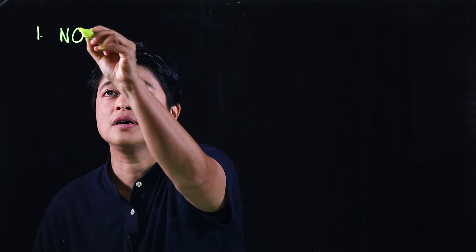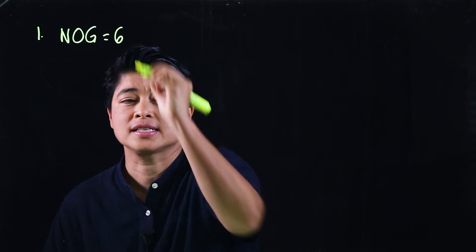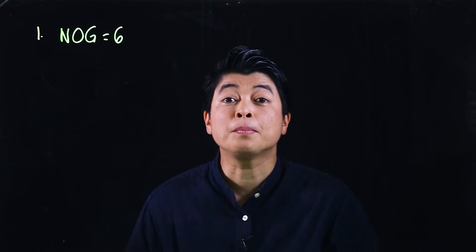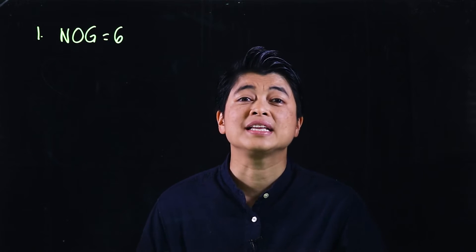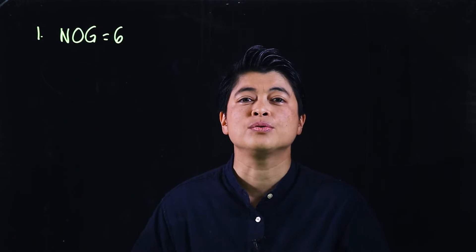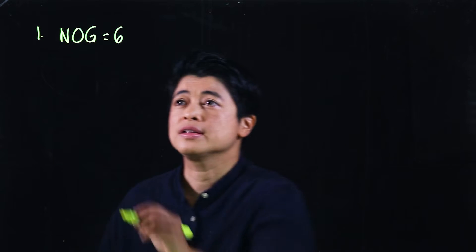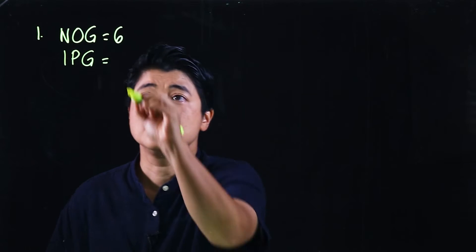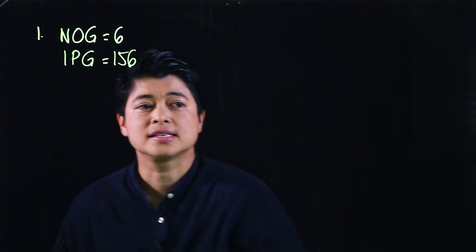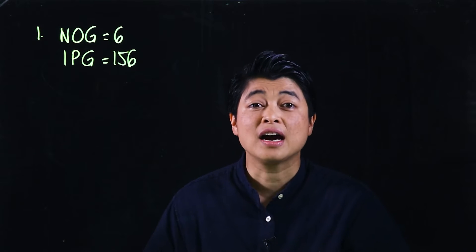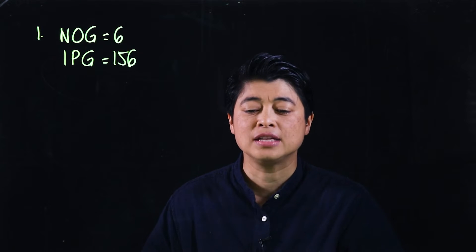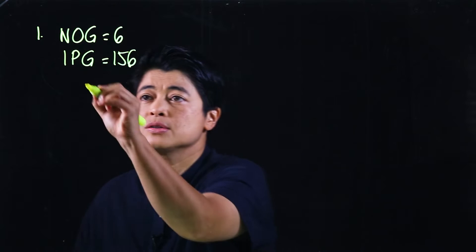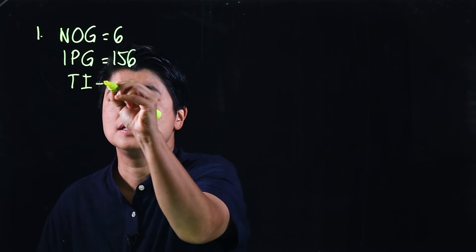Mrs. Lim has six boxes of pens, so the number of groups is six. The word 'each' tells us it's the items per group, which is 156. The question asks for the total items — how many pens did she have altogether?